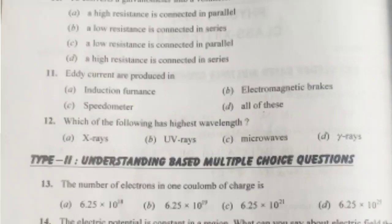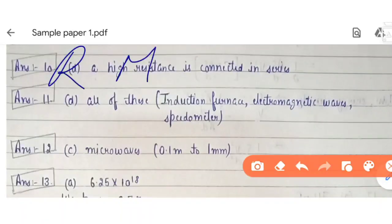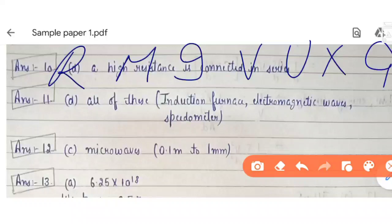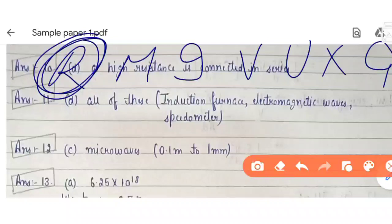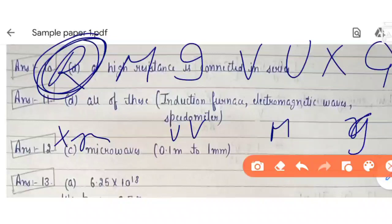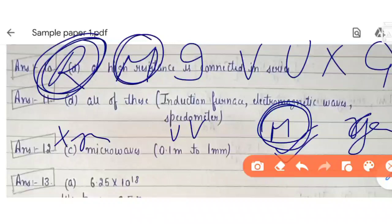To remember the order of the electromagnetic spectrum, use the mnemonic: 'Ram May I Visit Your Ex-Girlfriend.' The highest wavelength among the options — X-rays, UV rays, microwaves, and gamma rays — is microwaves. So microwave has the highest wavelength.